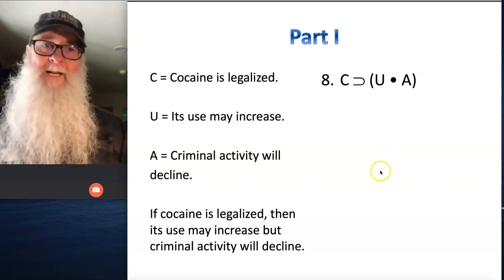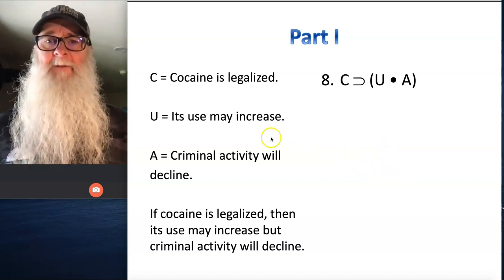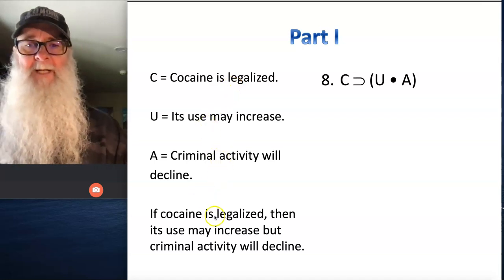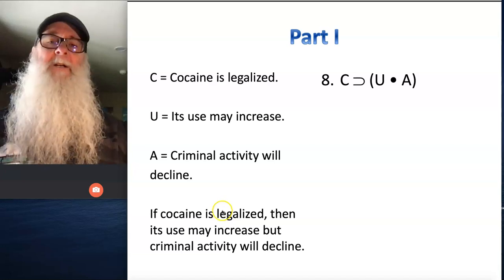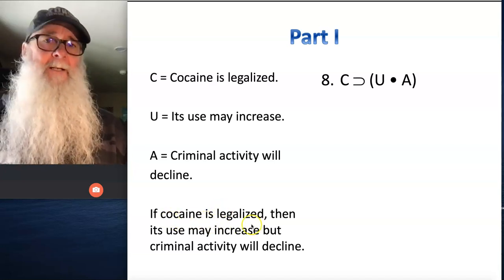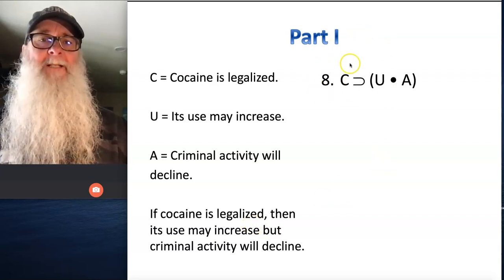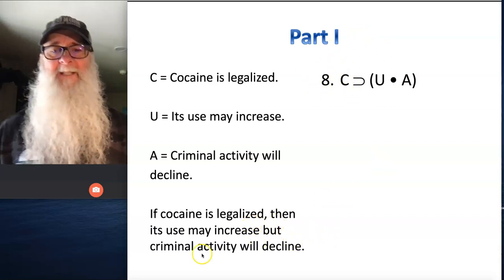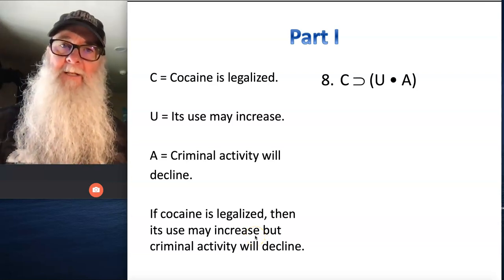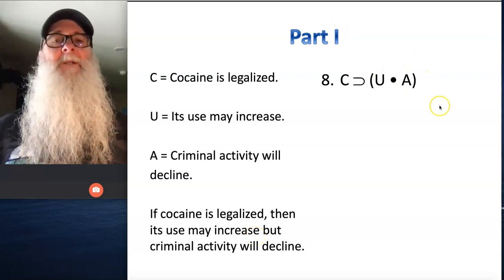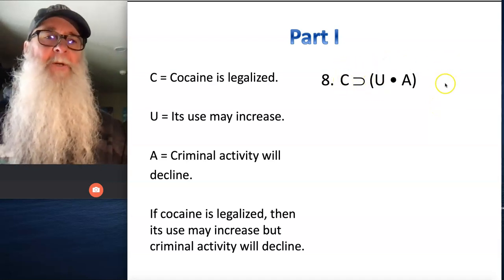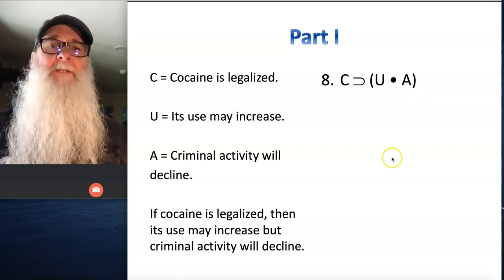Number eight. We've got three statements: cocaine is legalized, its use may increase, and criminal activity will decline. We've got another conditional statement here. Cocaine is legalized is the sentence that comes right after 'if,' so that's going to be on the left side of our horseshoe. And we see that the two other sentences — its use may increase and criminal activity may decline — are the two things that will be true if C is true. So we're going to group those together with parentheses.